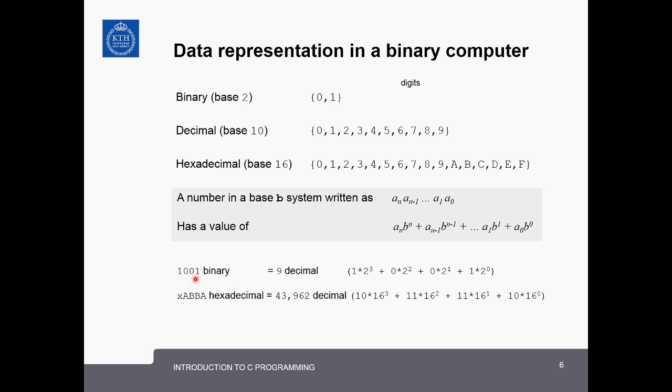So if we want to convert 1001 in binary to decimal, which is 9, this is done by 1 times 2 to the 3, which is 8, plus 0 plus 0, plus 1 times 2 to the 0, which is 1. 8 plus 1 gives you 9.